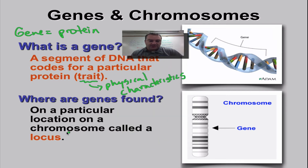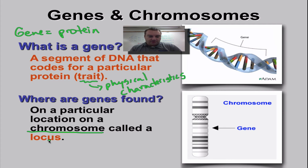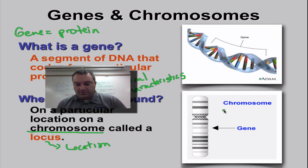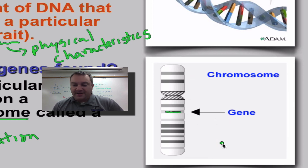Where do we find genes? Genes are found on chromosomes. The particular place where a gene is found on a chromosome is called a locus. Think of the root word — locus stands for location. So it's just a location on a chromosome. Right over here we have a chromosome, and in this area right here where this gene would be found, that's its locus.